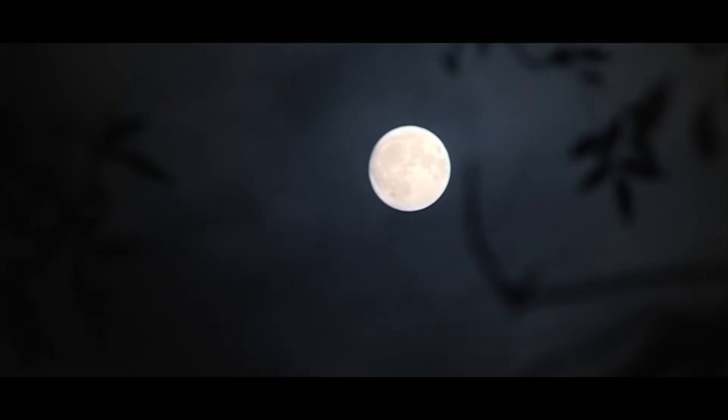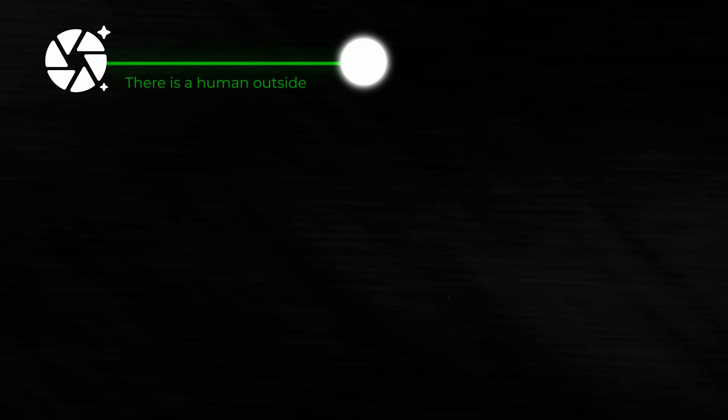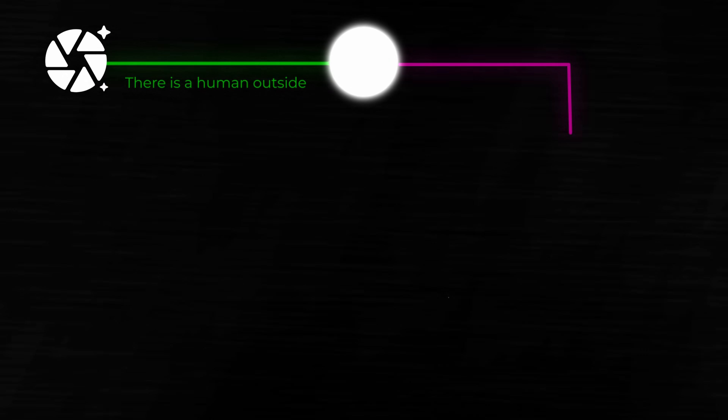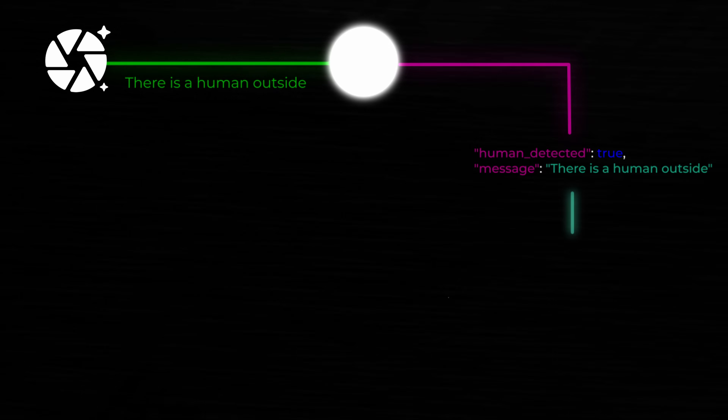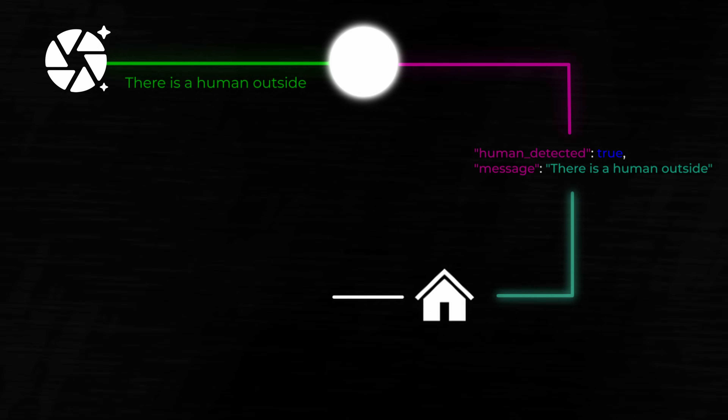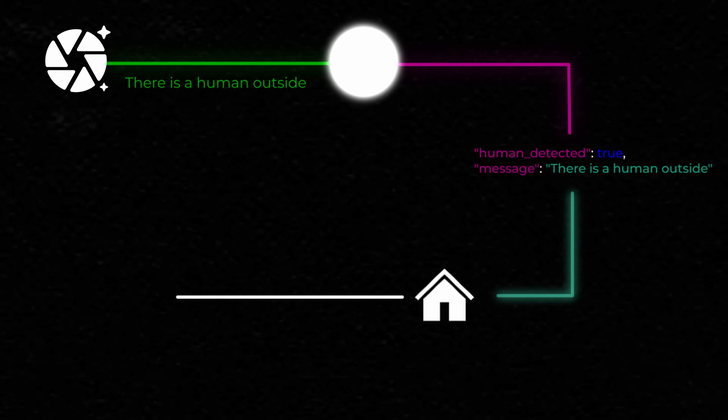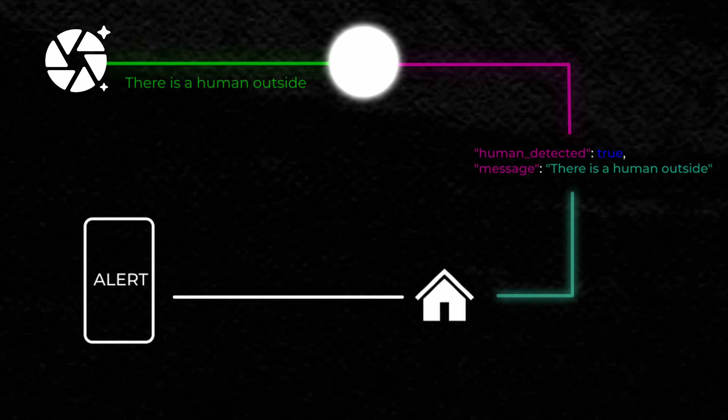Let's take it up another level. Imagine this: it's 2:52 a.m. and you're fast asleep. There's a stranger rummaging in your front yard. Your doorbell camera picks up the movement, and since your home is set to sleep mode, you have an automation that triggers when human presence is detected. Using LLM Vision, it answers the prompt about whether it sees a human outside. The response is then sent to another LLM, which gives you a structured output. That structured output tells your home: yes, there is actually a person here — send an alert. And then that alert goes to your phone and wakes you up.